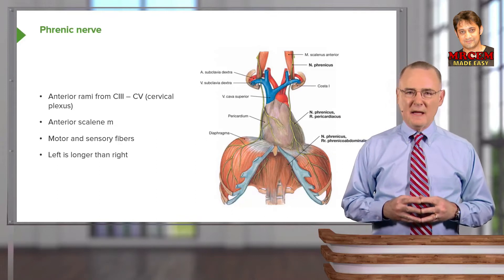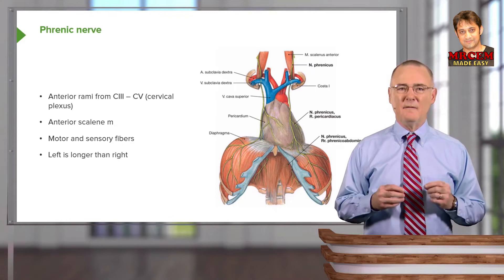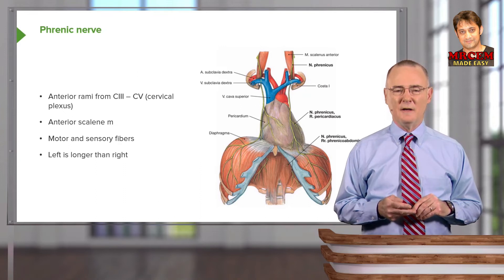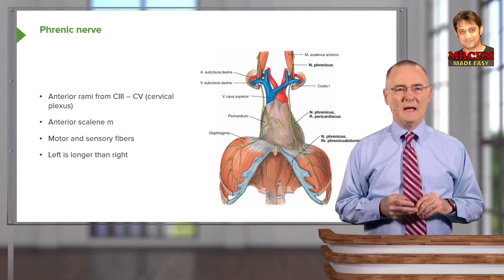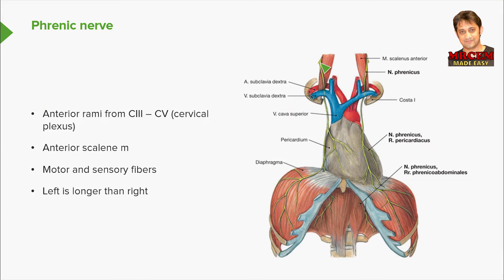Our first nerve is the phrenic nerve. The phrenic nerve is formed from anterior rami of the third, fourth, and fifth cervical spinal nerves, which help to form in part the cervical plexus. Once formed, it courses anterior to the anterior scalene muscle. Here we see the right phrenic nerve on the right anterior scalene and the left phrenic nerve on the left anterior scalene. Both phrenic nerves run on the lateral margins of the pericardium and convey both motor and sensory fibers.